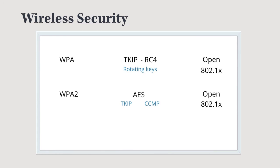One protocol not shown on the diagram is WEP — Wireless Equivalent Protection. We don't use that one because it's very insecure; basically all it's doing is allowing the same kind of security we would see over a wired connection, which means no meaningful authentication. We really shouldn't ever find ourselves using WEP security.